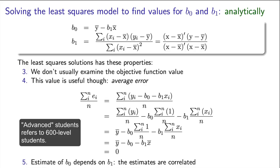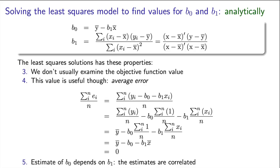One other point to make is that it's quite clear that the estimate of b0 depends on the estimate of b1. Any estimation error in the slope, b1, propagates and affects the estimate of the intercept. We say that these estimates are correlated.